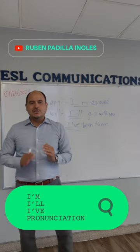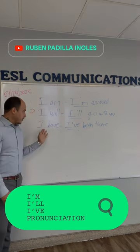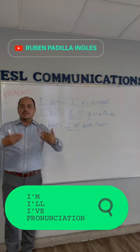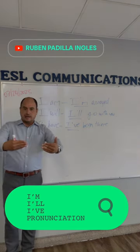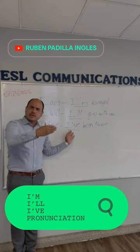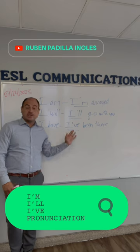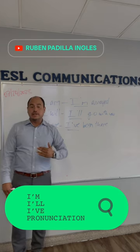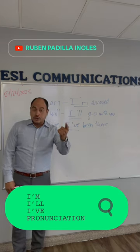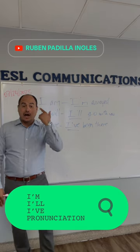The pronunciation is 'I'll,' not 'all.' Good. Number three: el auxiliar 'have' — para cosas que has hecho. Yo he: 'I have.' Como digo que yo he estado ahí: 'I have been there.' Abbreviated: I've. I've been there. I've seen it.